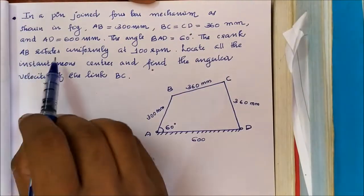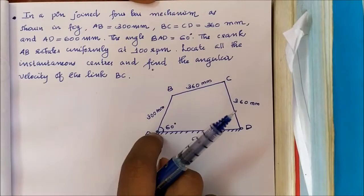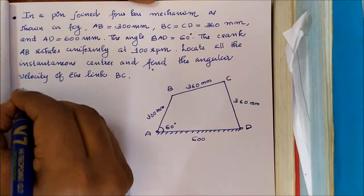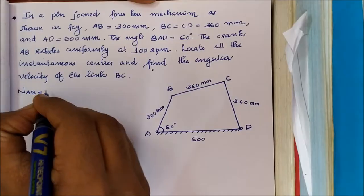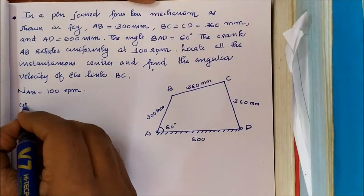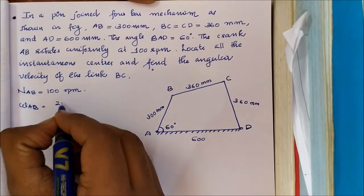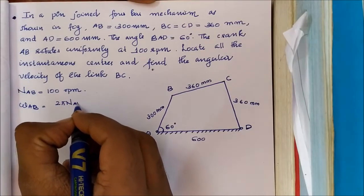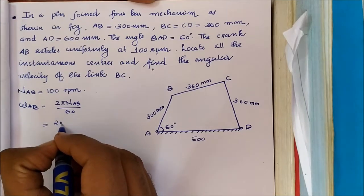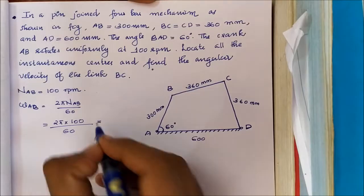The crank AB rotates uniformly at 100 RPM. The angular velocity omega AB equals 2π N by 60, which is equal to 2π times 100 divided by 60.